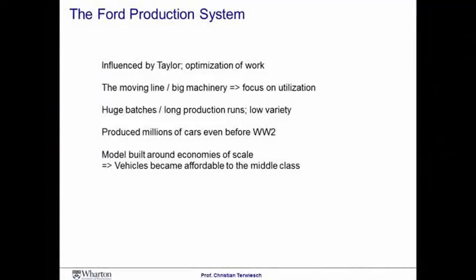To get a sense of the Toyota production system, we have to go back into automotive history. The first car was built by two Germans, Daimler and Benz, in the late 19th century. Soon other car builders followed. However, vehicles were produced in job shops at very, very small scale, making production very inefficient and vehicles very expensive. Thus, they were only affordable to the upper class.